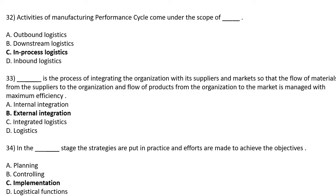In the DASH stage, the strategies are put into practice and efforts are made to achieve the objective — Option A: Planning, Option B: Controlling, Option C: Implementation, Option D: Logistical Function. The correct answer is Option C: Implementation.